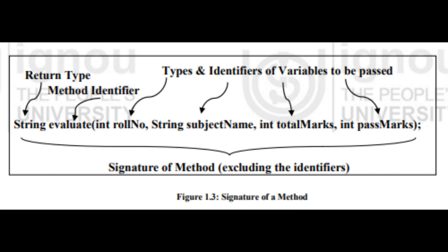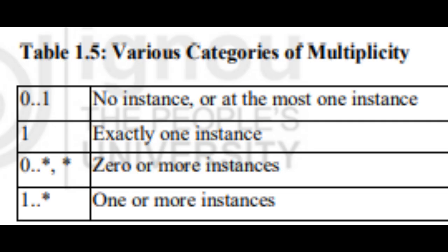Interface. Every class defines an interface for itself and its objects use only this interface for all types of communications. An interface of a class or object is the collection of signatures of all the methods contained in the class or object. Through this interface, objects communicate with themselves or with other objects by passing values of variables to and fro, changing their own state or that of other objects. Figure 1.4 shows the mechanism of message passing between two objects through their interfaces. Various OOP languages have different mechanisms to implement the interfaces.